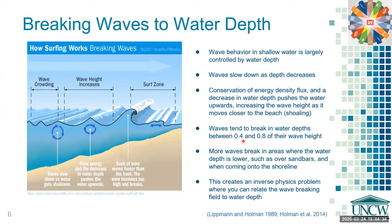Because of the conservation of energy density flux and a decrease in water depth, it actually pushes the water upward, increasing the wave height as it moves closer to the beach, which is called shoaling. Also, waves tend to break in water depths between 0.4 and 0.8 of their wave height. Because of this, more waves tend to break in areas where the water depth is much lower, such as over sandbars and when coming onto the shoreline. This creates an inverse physics problem where we can relate the wave breaking field to water depth.